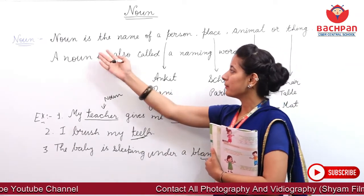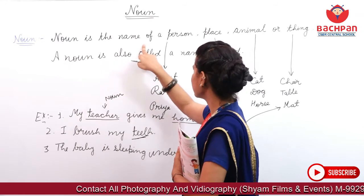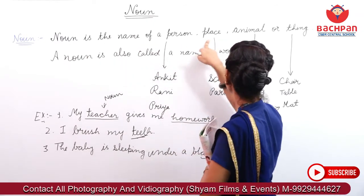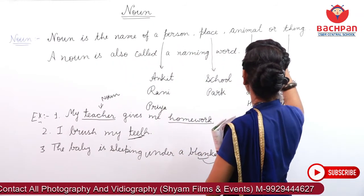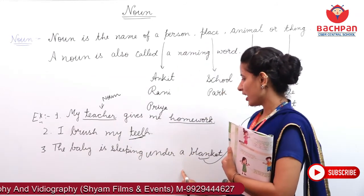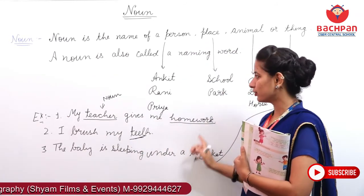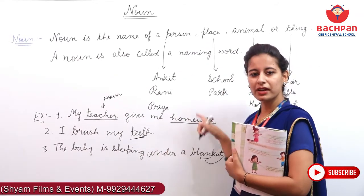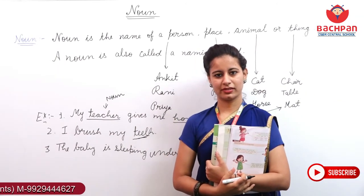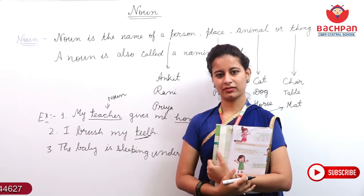Toh apan ni man ne definition di thi aapko. Noun is the name of a person, place, animal or thing. Toh apan ni sab ye kya hai? Animal, place or thing. Toh ye sab kya hua aapna? Noun. Thank you.